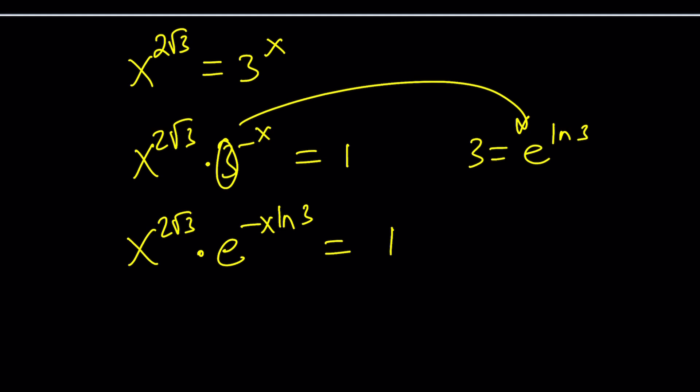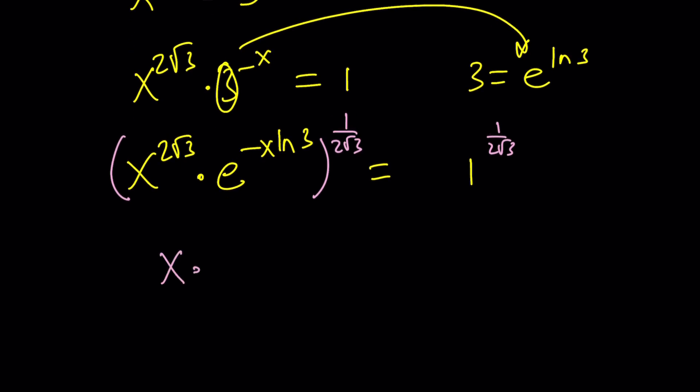Here's what I'm thinking. I think we need a single x here, so we're going to raise both sides to the power 1 over 2√3. We have 1, and now we're going to raise both sides to the power 1/(2√3), and of course, this is just going to be unchanged. The power of x is going to disappear. We're going to get x, and then times e to the power negative x ln 3 divided by 2√3.